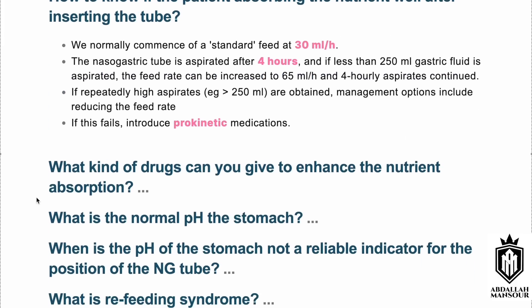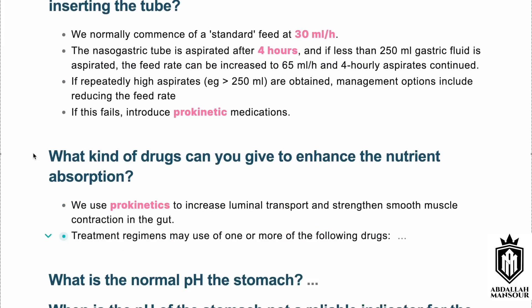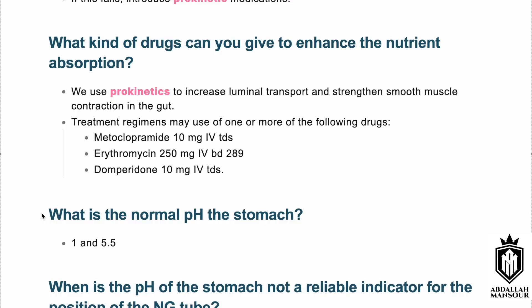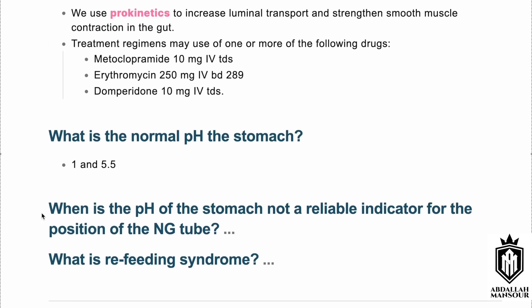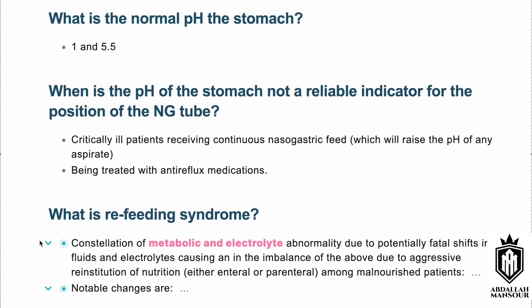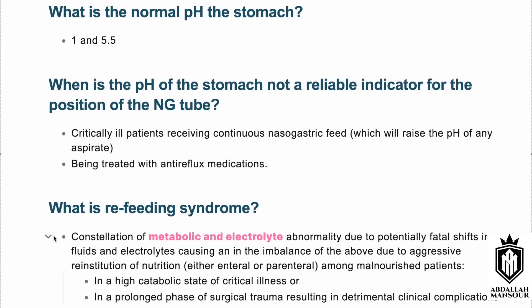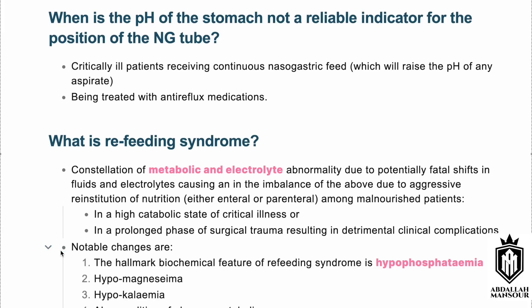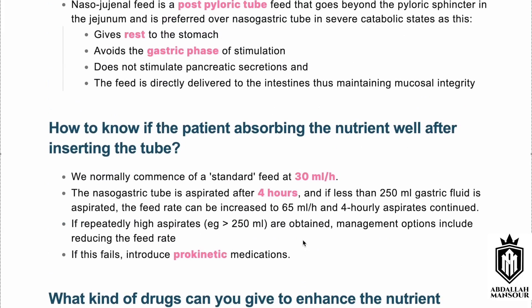Monitor patient weight, arm circumference, abdominal girth, line complications, and fluid and electrolytes. Nasojejunal feed is preferred — it rests the stomach, avoids pancreatic stimulation, and delivers feed directly to maintain mucosal integrity. Measure aspirate to assess absorption; it should be less than 250 ml at four hours. Prokinetics include metoclopramide, erythromycin, and domperidone. Normal stomach pH is 1 to 5.5, unreliable in acutely unwell patients or those on antacids. Refeeding syndrome is a fatal electrolyte shift; hypophosphatemia is the hallmark.